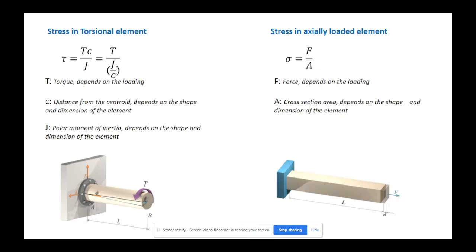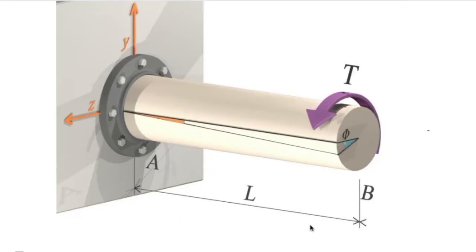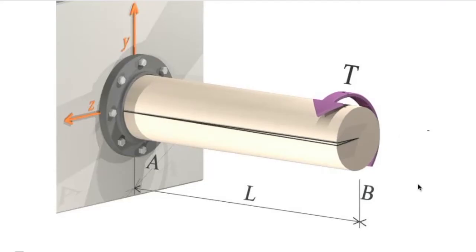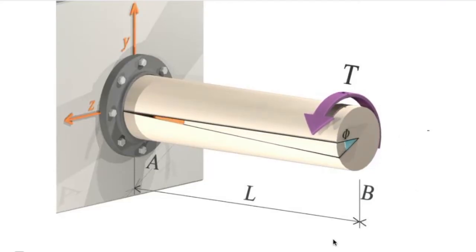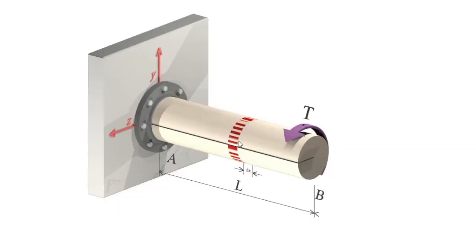Consider one simple torsional element subjected to a torque at the right end, with a constant cross-sectional area, fixed at the left end. When this element is put under torque, it is going to twist. The cross-sectional area remains as a circle — it doesn't deform, it simply twists. I want to determine how much total twist occurs at the right end of this shaft. I'll take out one small, tiny portion and draw it larger.